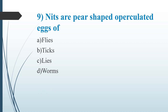Ninth question: Nits are pear-shaped operculated eggs of. Option A, Flies. Option B, Ticks. Option C, Lice. Option D, Worms. Answer is Option C, Lice.